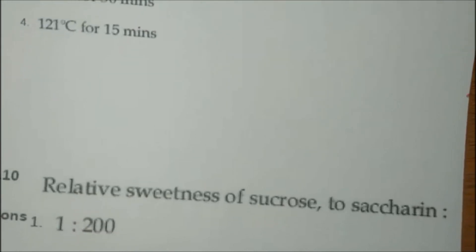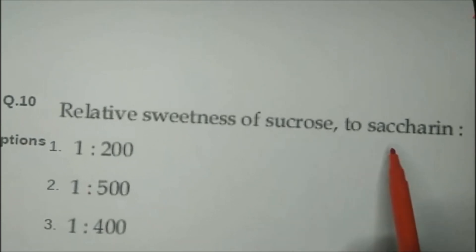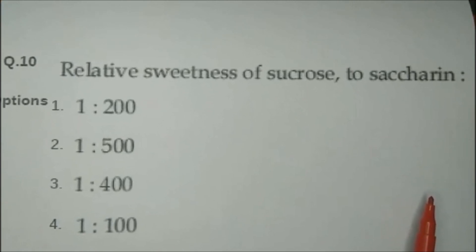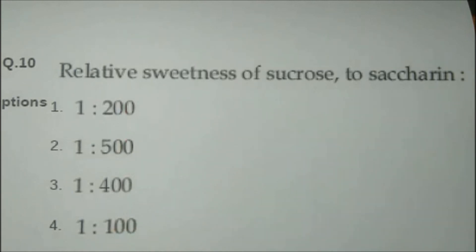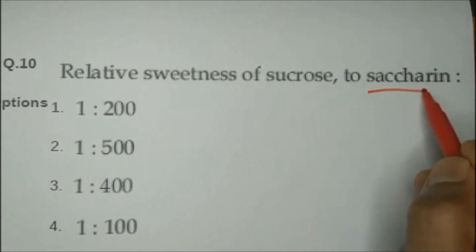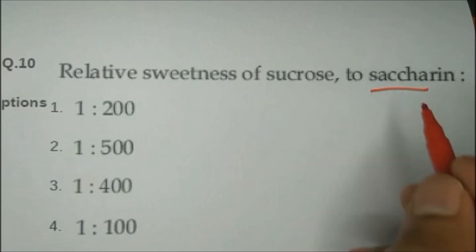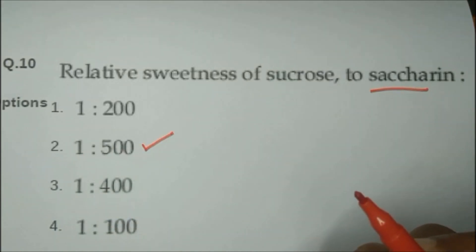Question number ten, the last question of the video: Relative sweetness of sucrose to saccharin — options are 1:200, 1:500, 1:400, 1:100. Saccharin is about 500 times sweeter than sucrose. So the correct answer is 1:500.